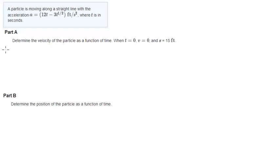Okay, so we know the acceleration is 12t minus 3t to the 1/2, and we know that the velocity is the integral of the acceleration over time, which means that this is the integral of 12t minus 3t to the 1/2 over time plus C.